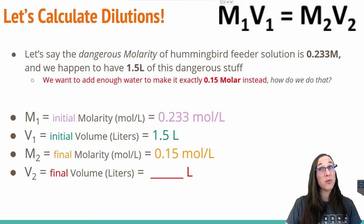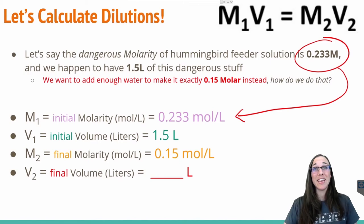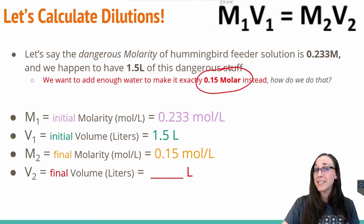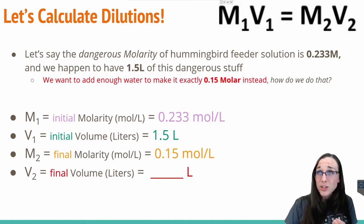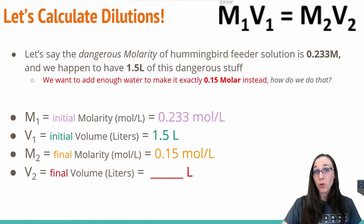This is the same problem as before, and we already know that we had 0.233 molar as our beginning concentration, our M1, the initial molarity. We also know that we made 1.5 liters of that initial concentrated hummingbird feeder. The question told us that in order to keep it safe for the hummingbirds, we need to dilute it to 0.15 molar, so that would be our M2. And now we want to know how much water do we need to add to the solution we've already generated in order to create that 0.15 molar solution.